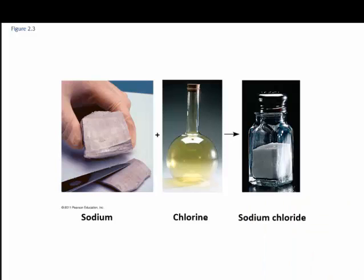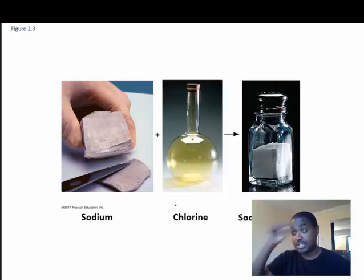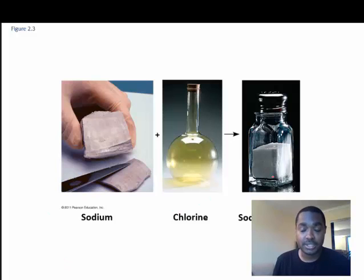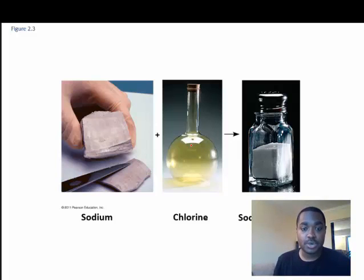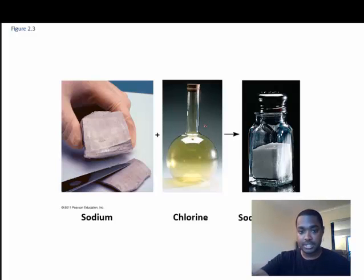Here we have a molecule you should be familiar with: sodium chloride, table salt. It's made of one atom of sodium and one atom of chlorine. The properties of sodium and chlorine are much different than the properties of table salt. Sodium itself is a toxic metal, and chlorine is a poisonous gas. When those atoms interact, they give you sodium chloride — an ionic compound which is delicious and less toxic than chlorine gas.